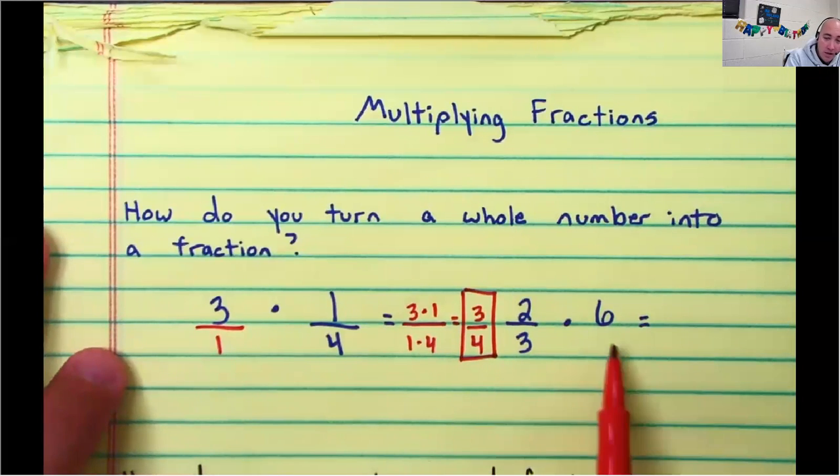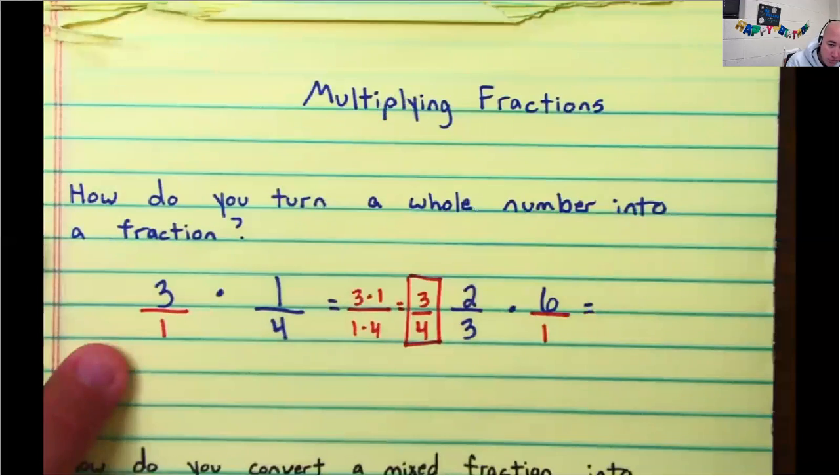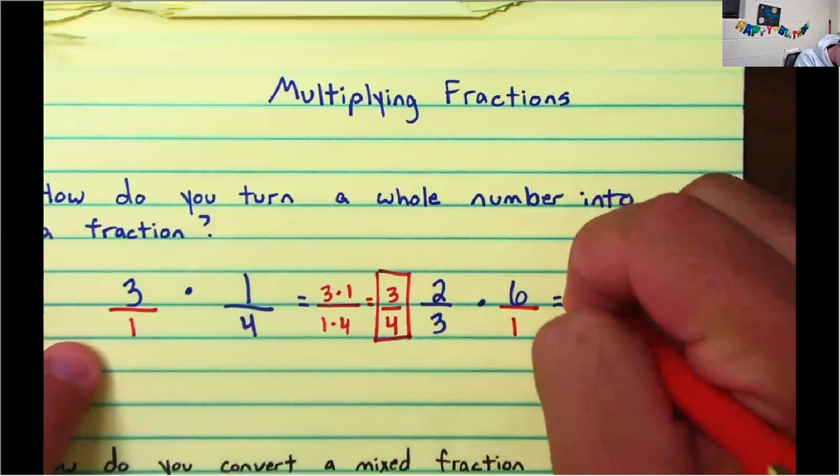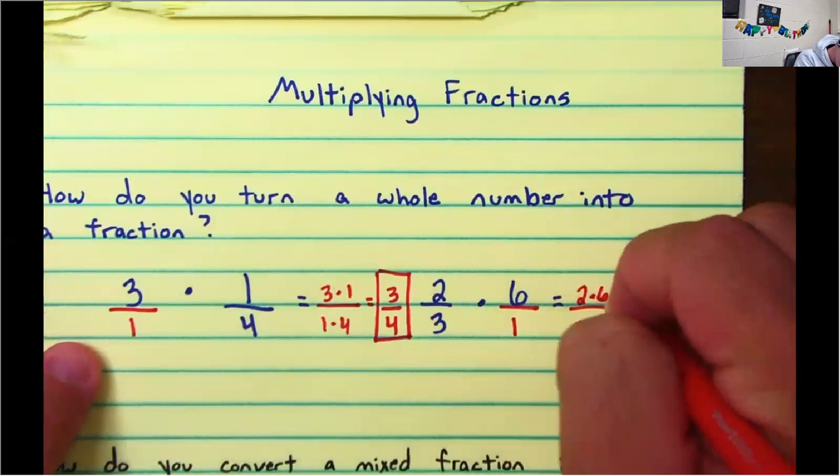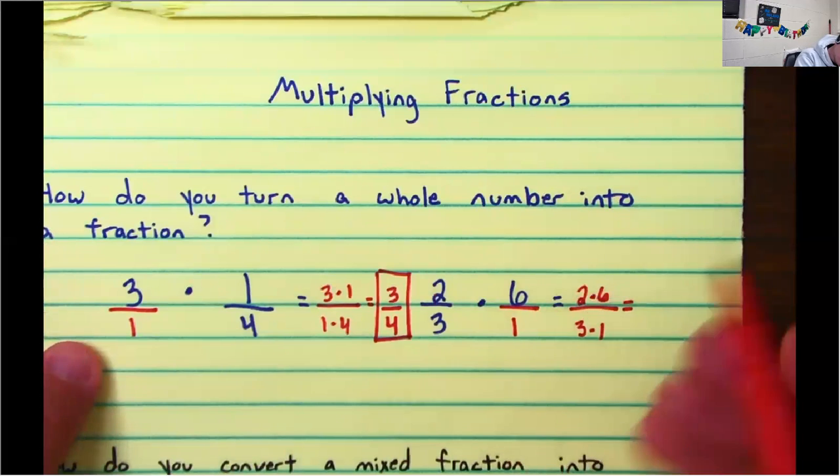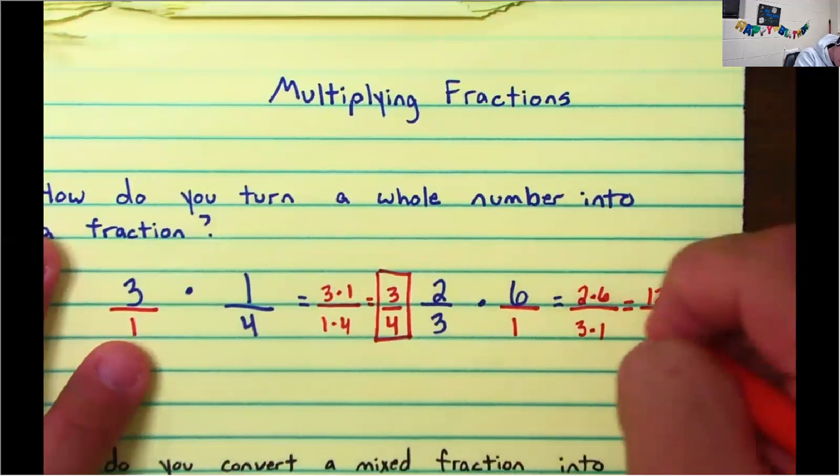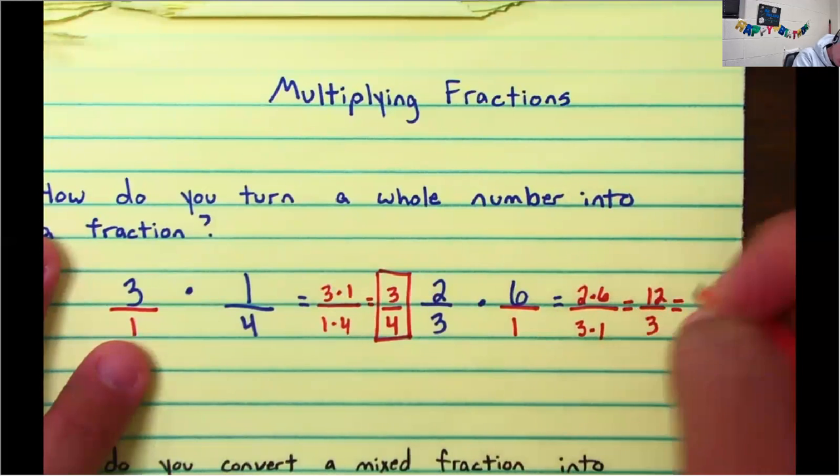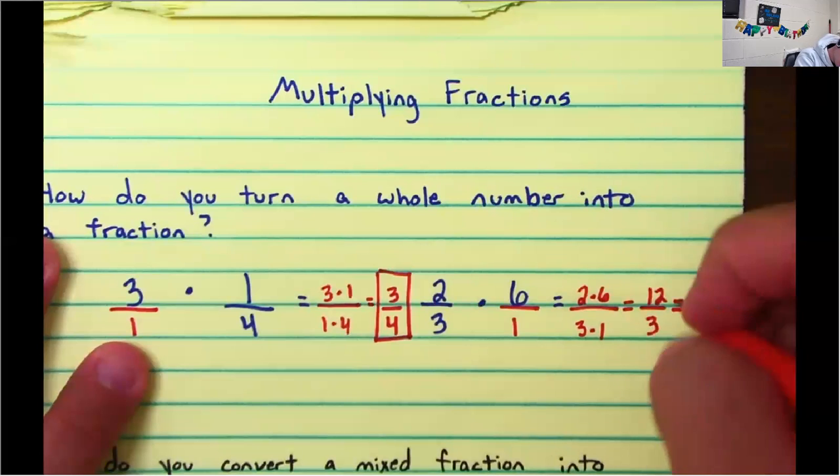Let's check out the next one. I have a whole number. Turn into a fraction by putting it over one. Now, multiply straight across. So that's like two times six over three times one. Well, two times six, that's 12. Three times one is three. Can 12 over three be simplified? Well, yes. 12 divided by three is just four.